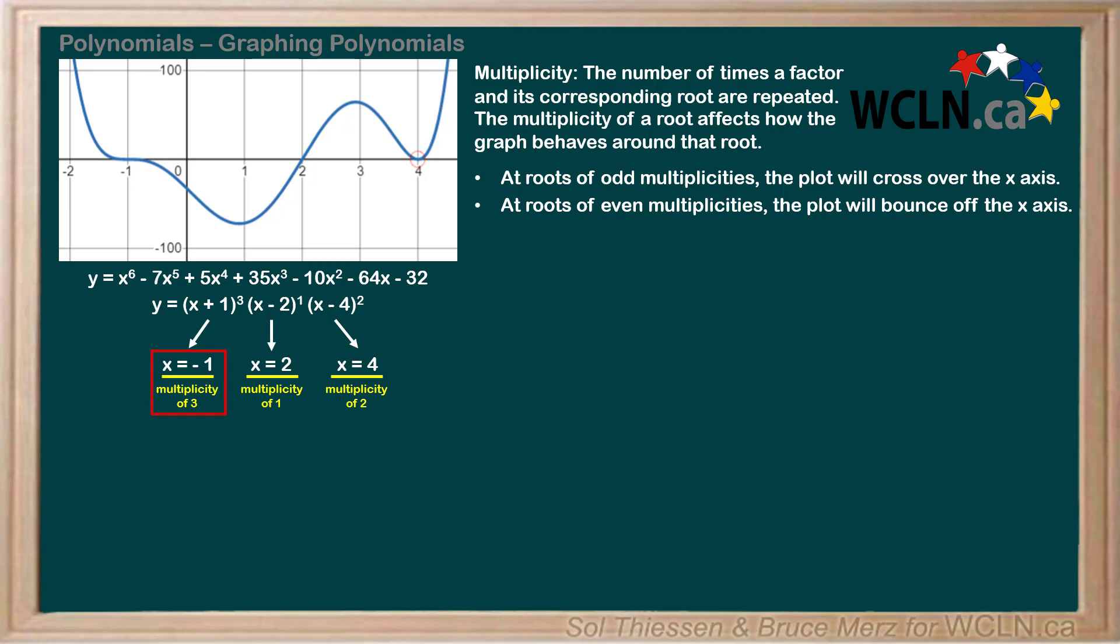Note that at the root of higher odd multiplicity, x equals negative 1, which has multiplicity 3, the graph flattens out before crossing the x-axis. This trend continues with higher multiplicities, both even and odd. As the multiplicity of a root increases, the plot at that root will appear to flatten out more.